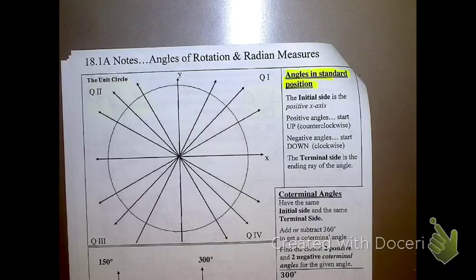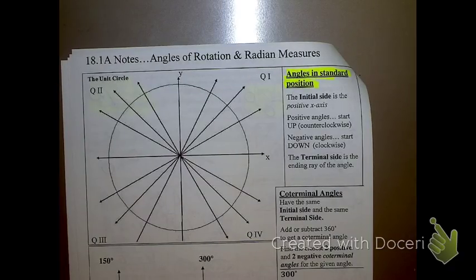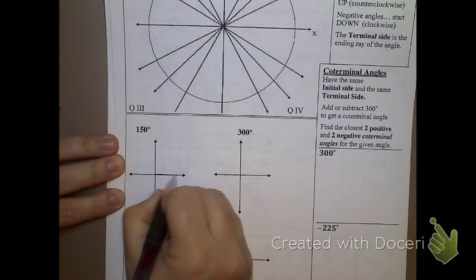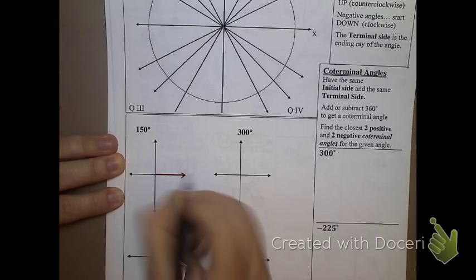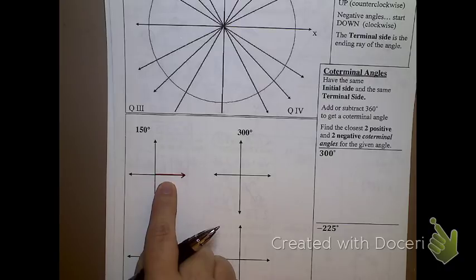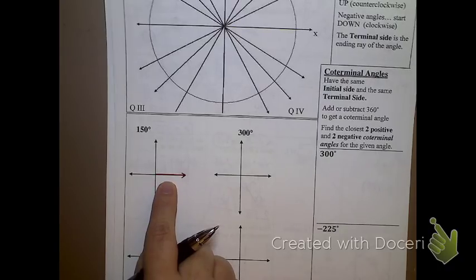How many sides is an angle made up of? Two rays, typically. One of those sides we call the initial side, and the initial side for our angles is always the positive x-axis. The vertex of your angle is always the origin.